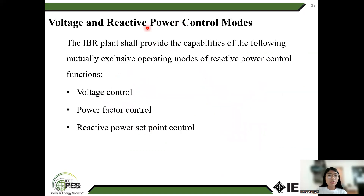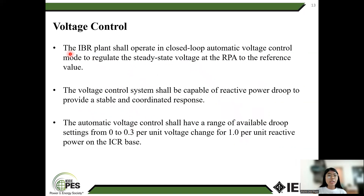Voltage and reactive power control mode. The IBR plan should provide the following capabilities per the ICR. The IBR plan should operate in closed-loop automatic voltage control mode to regulate steady-state voltage at the RPA to a reference value. The voltage control system should coordinate all reactive power resources to provide a stable and coordinated response. The automatic voltage control should have a rate applicable to a range from 0 to 0.3 per unit voltage change per 1 per unit reactive power on the ICR base.